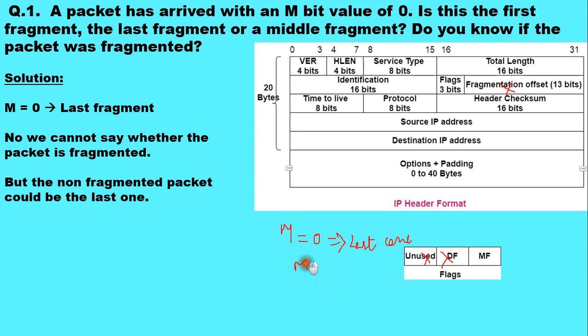When M bit is equal to 1, it means that there are more fragments and the fragment can be the first fragment or it can be the middle fragment. But when M bit is equal to 1 and we know the offset value, then we can identify whether it is the first or the middle fragment.